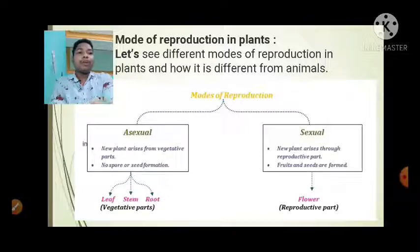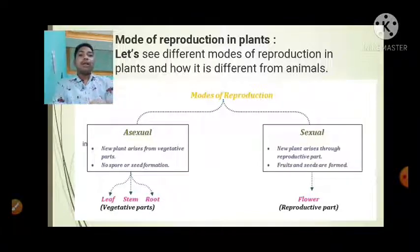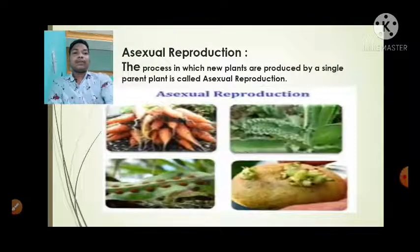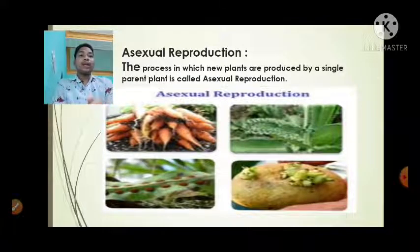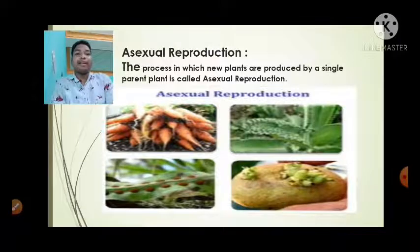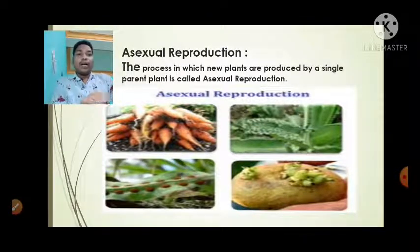What is asexual reproduction? The process in which new plants are produced by a single parent plant is called asexual reproduction.